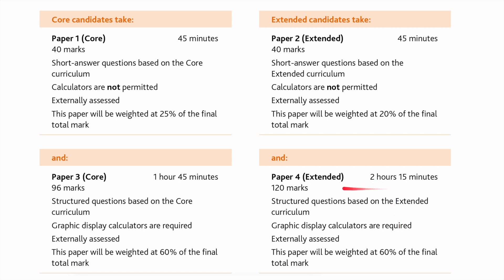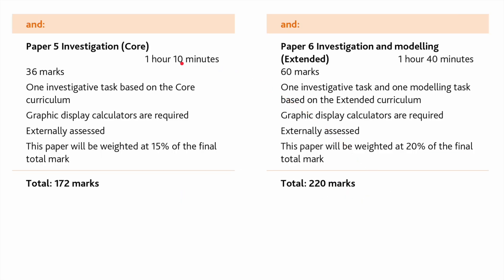The extended Paper 4 runs for 2 hours and 15 minutes and is worth 120 marks. Both papers use graphic display calculators. Finally, there are two investigation tasks. Paper 5 is the core investigation task, lasting 1 hour 10 minutes and worth 36 marks, weighted at 15% of the final mark. Paper 6, investigation and modelling for the extended, is 1 hour 40 minutes and worth 60 marks, at 20% of the final mark. Overall, that's 172 marks for core students and 220 marks for extended students.